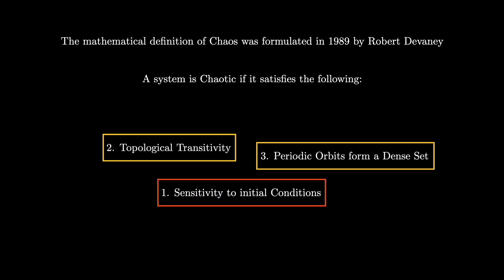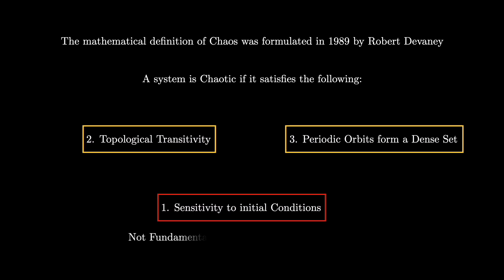A few years later, in 1992, a group of Australian mathematicians proved that sensitivity to initial conditions was automatically satisfied if the other two were. So the only two fundamental notions that characterize a chaotic system are that it's topologically transitive and that its periodic orbits form a dense set. So what exactly do these two criteria mean?